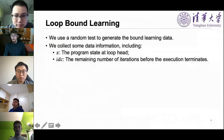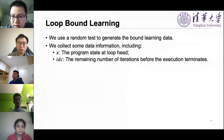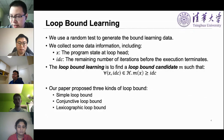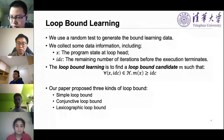We use a random test to generate data for bound learning. During the test, we collect two kinds of information: one is X, the program state at the loop head, and the other is IDC, which represents the remaining number of iterations before the execution terminates. The loop bound learning problem is to find the loop bound candidate M such that for all data in the dataset, M(X) is greater than or equals IDC. Our paper proposes three kinds of loop bounds: simple loop bounds, conjunctive loop bounds, and lexicographic loop bounds. In this presentation, I will introduce the first two bounds briefly.